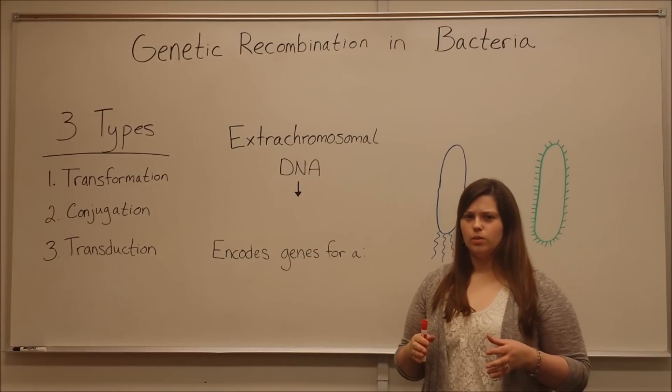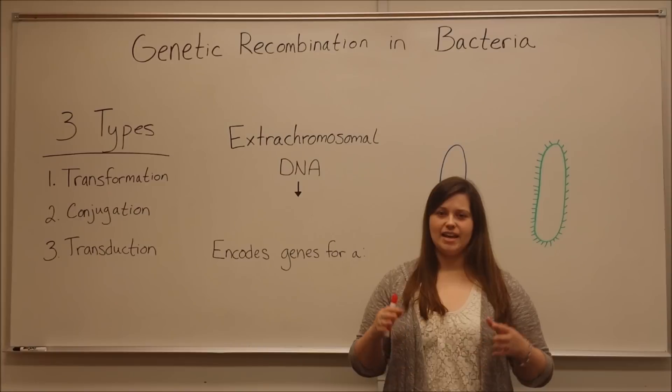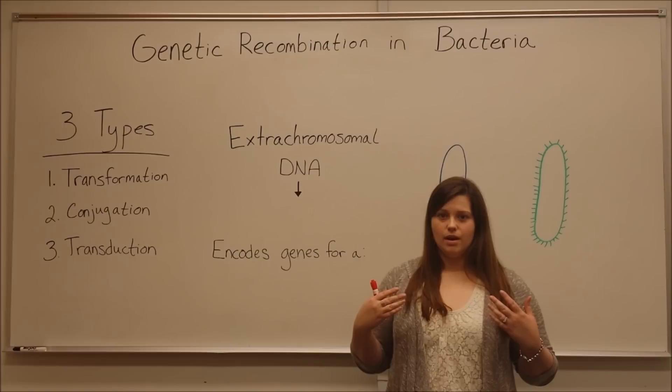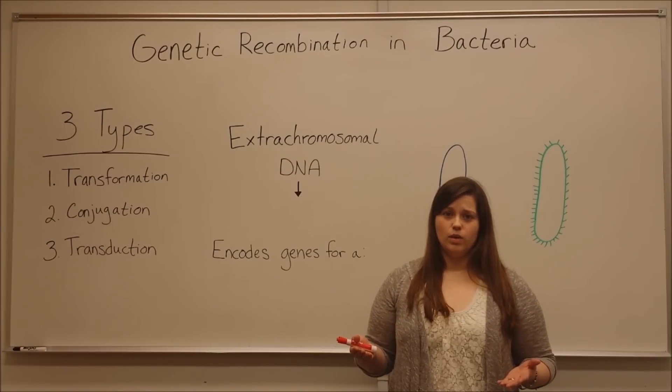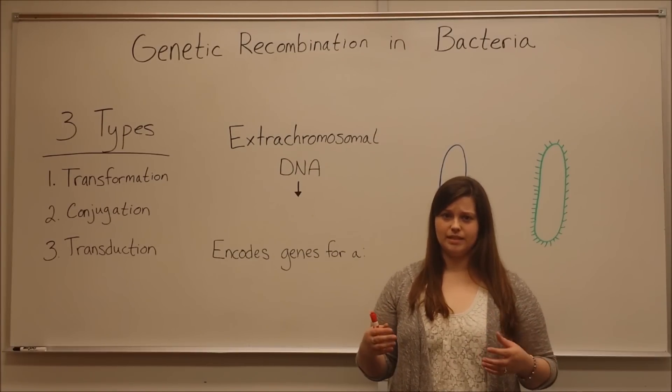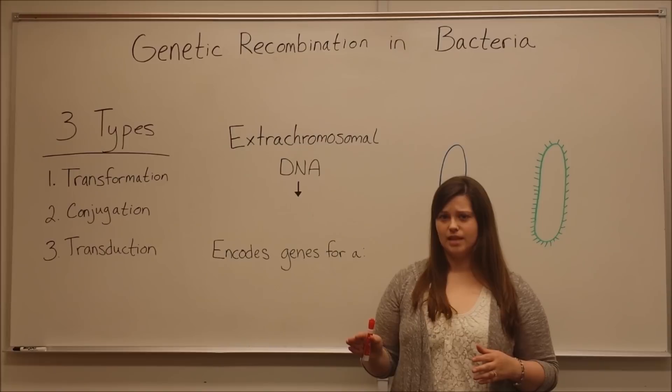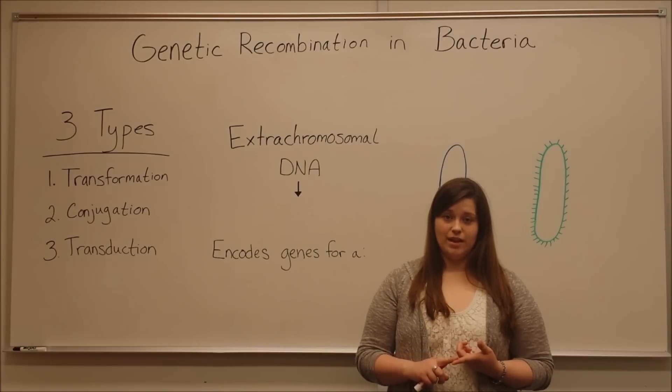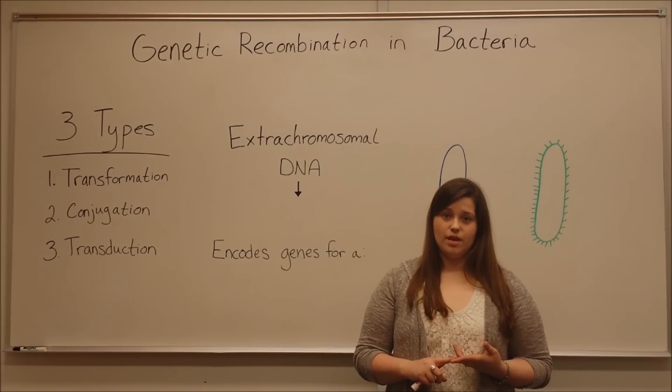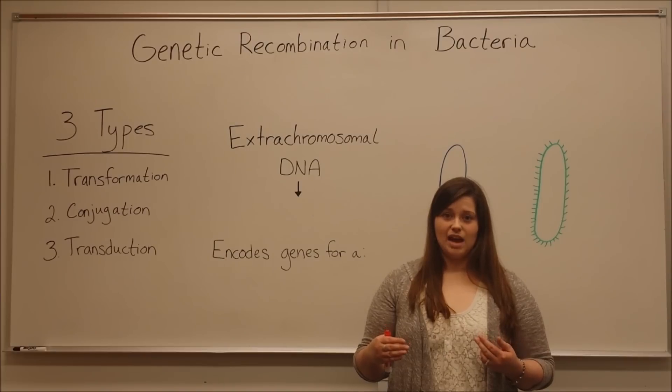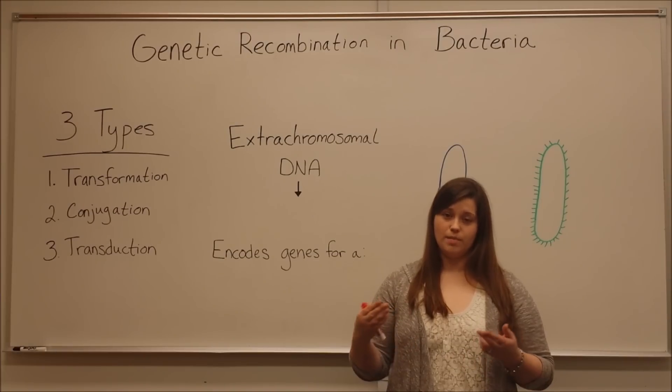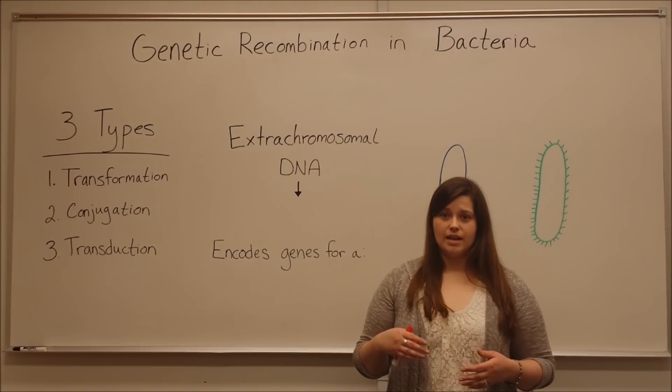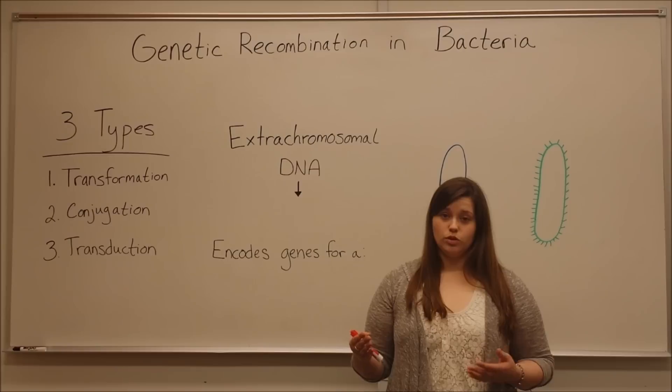Bacteria cells have the ability to obtain extra DNA through various mechanisms that can give them extra functionality. They can pull DNA from different places, and this DNA may enable them to be resistant to antibiotics, gain a virulence factor that allows them to establish or maintain an infection, or give them the ability to produce toxins.